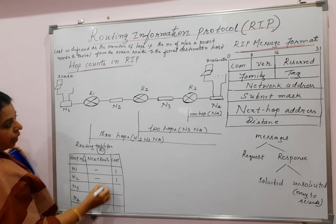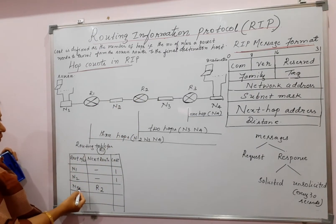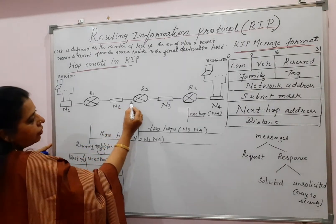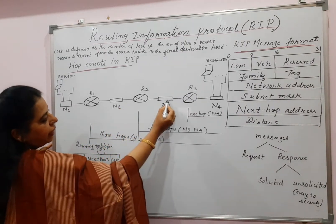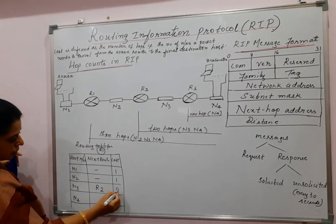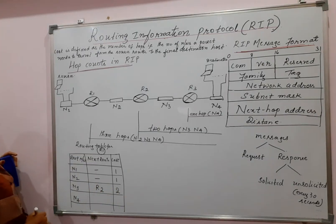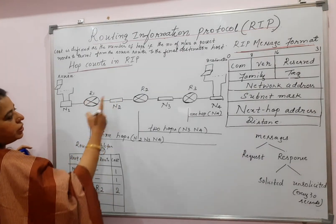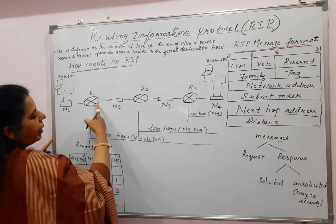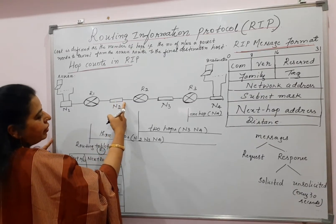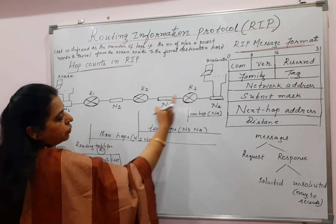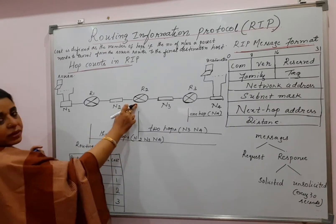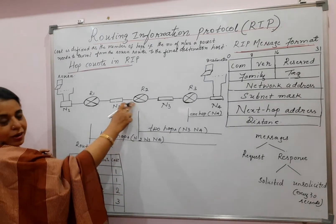For N3, the next router will be R2 and the cost — this is one network and the destination network is N2 — so the cost is 2. Now for R1 to reach N4, the packet has to travel this hop 1, 2, and 3 — so the cost is 3. But the next router is R2.